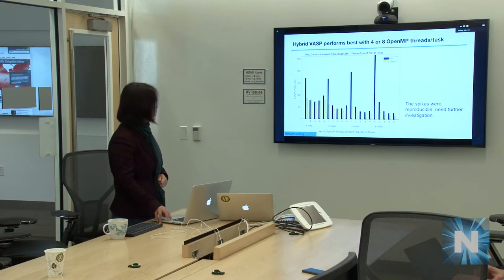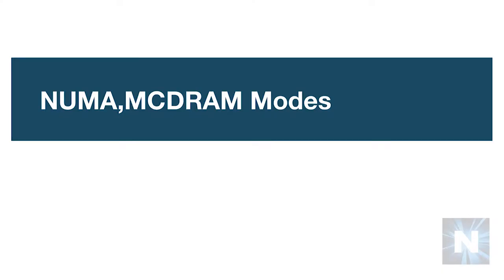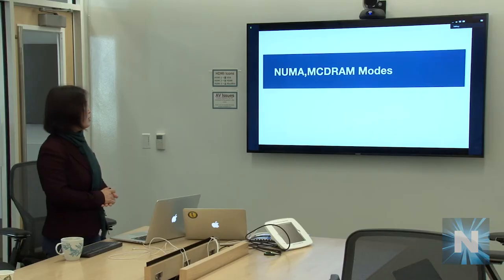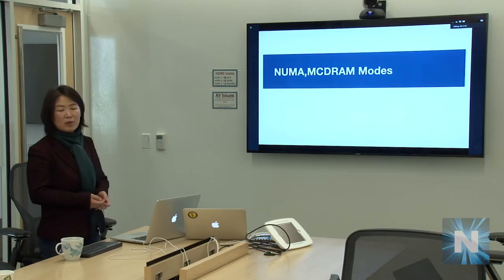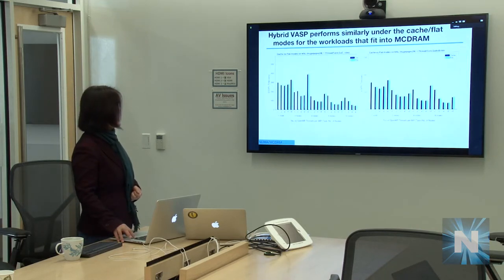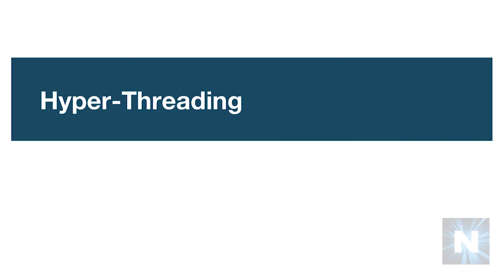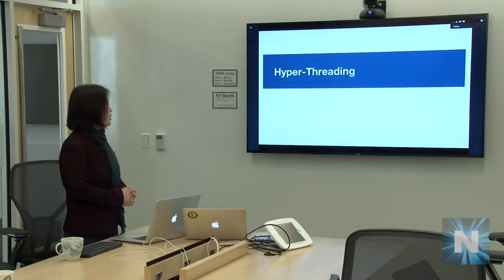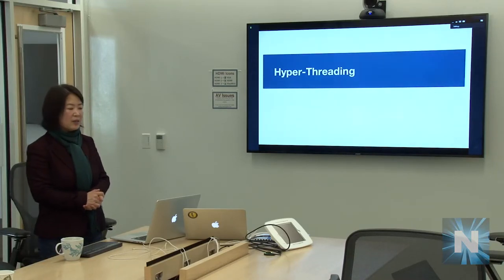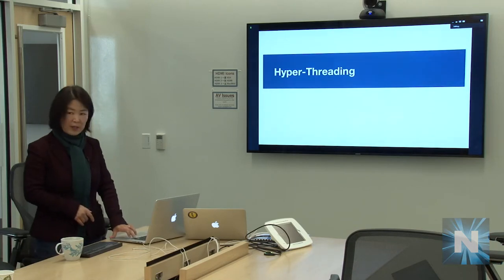We first investigated thread parallel scaling, then looked at memory modes. NERSC's recommendation was to use either quad flat mode or quad cache mode, so our tests started from there. The tests show they are very similar for VASP, with some spikes that are unfortunately reproducible. Our conclusion is that all these test cases fit in MCDRAM, so as long as the case fits in MCDRAM memory, we didn't see a performance difference between flat and cache mode. Our recommendation is to just use cache mode.